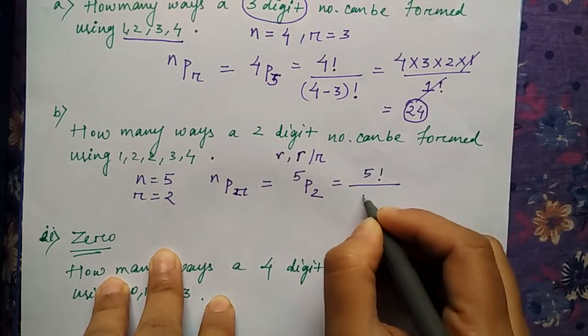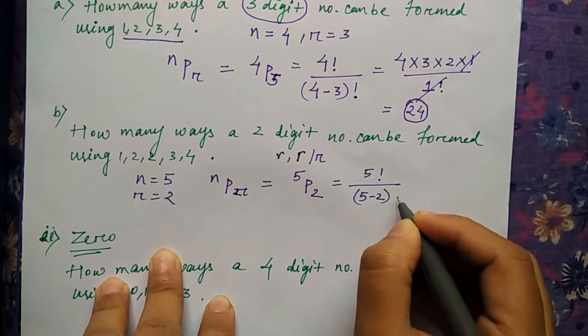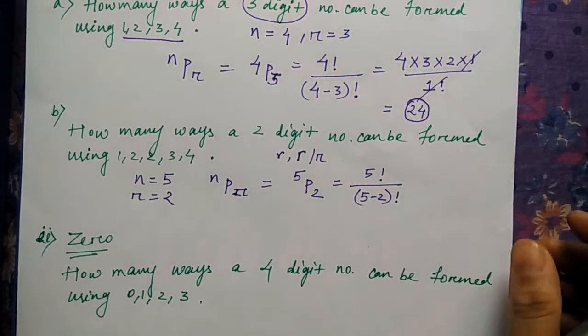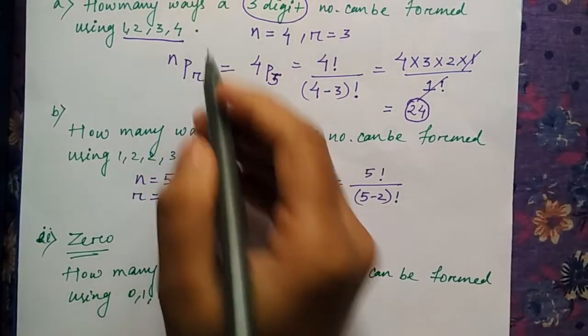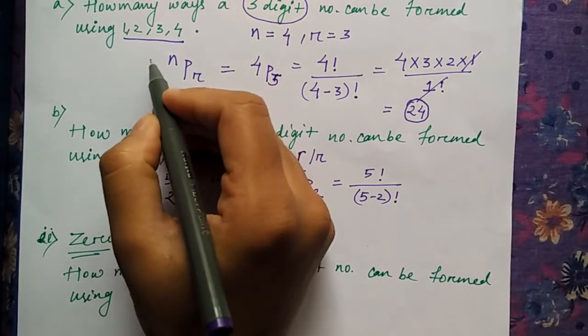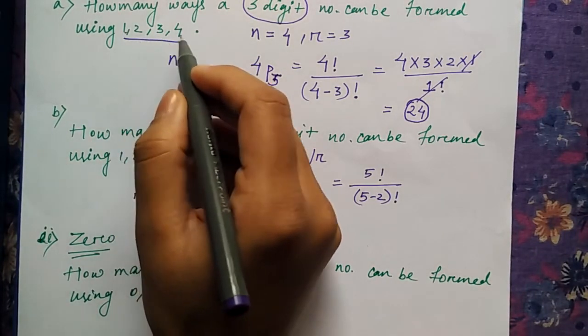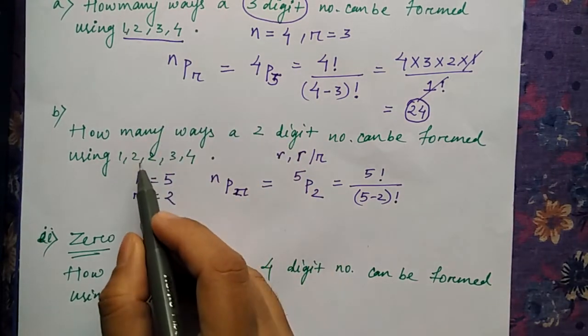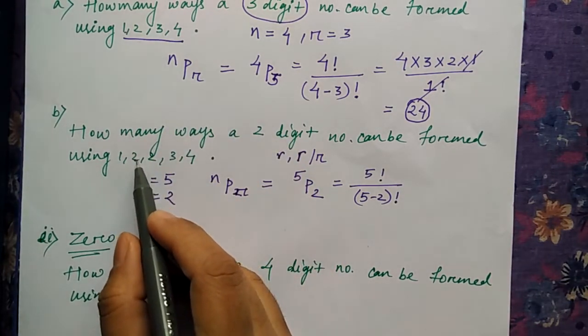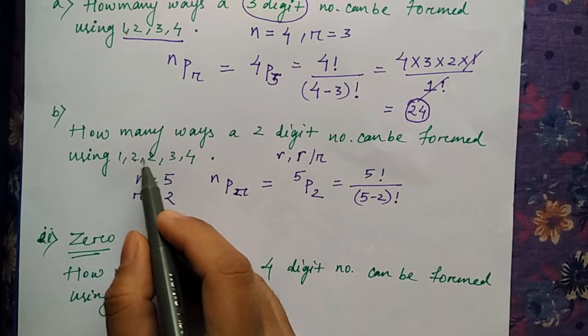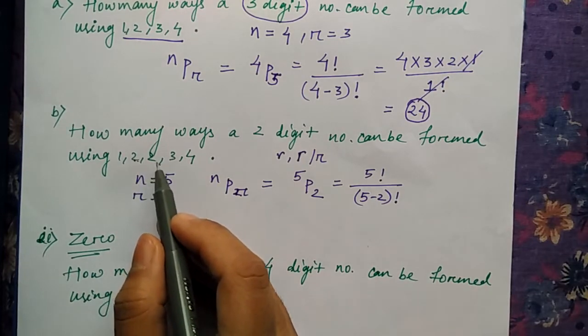So it will be 5 factorial by (5 minus 2) factorial. But you can see the difference between the previous question and this question. There you had unique numbers—1, 2, 3, 4—all distinct from each other. But can you see the same thing here? Here you have got 2 present twice, which is not unique. Duplicacy is there.